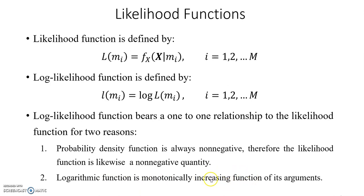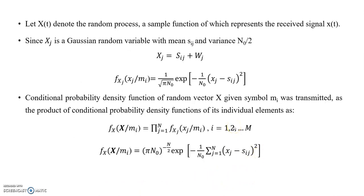Our aim is to apply this in an AWGN channel. We consider an AWGN channel where the received signal is x(t). x_j represents a component of the received signal along the j-th orthonormal basis function. The received signal has both a signal component and a noise component. The component x_j equals the signal component s_j plus the noise component n_j. Its mean is always equal to s_j and its variance is equal to N₀/2, making it a Gaussian random process.